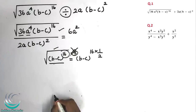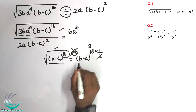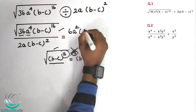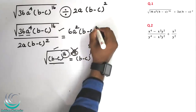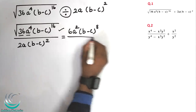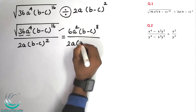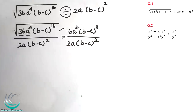So multiplying the whole term: 16 into 1 by 2, the cancel gives 8. So the result is (b-c) power 8. The denominator is required next. So 2a into (b-c) power 2 — we can cancel using logic.